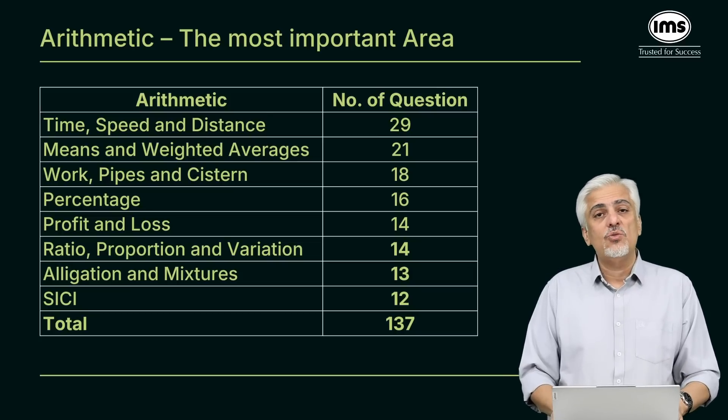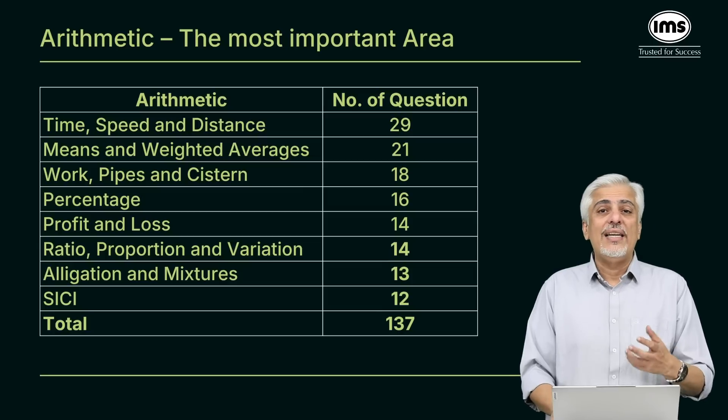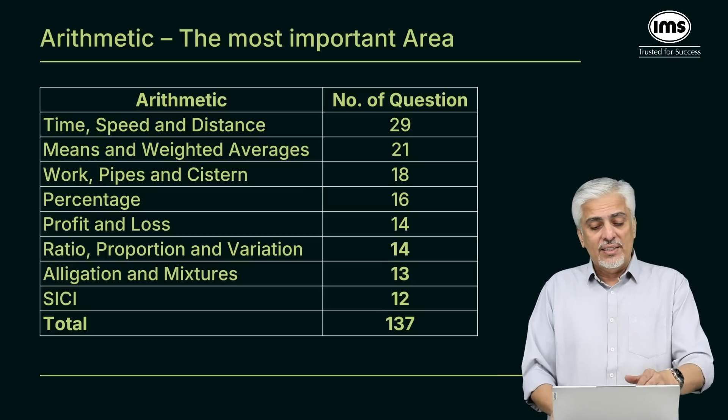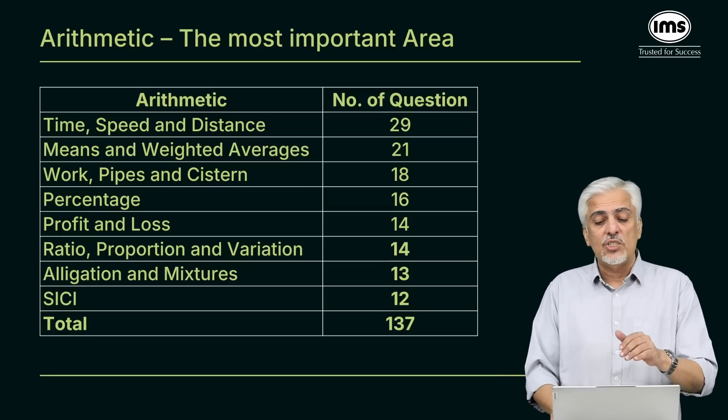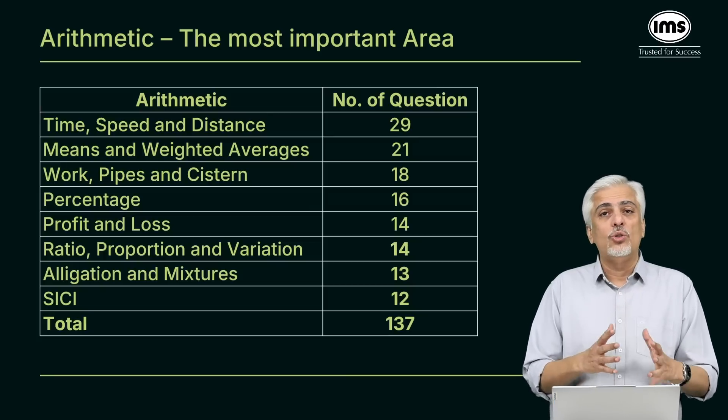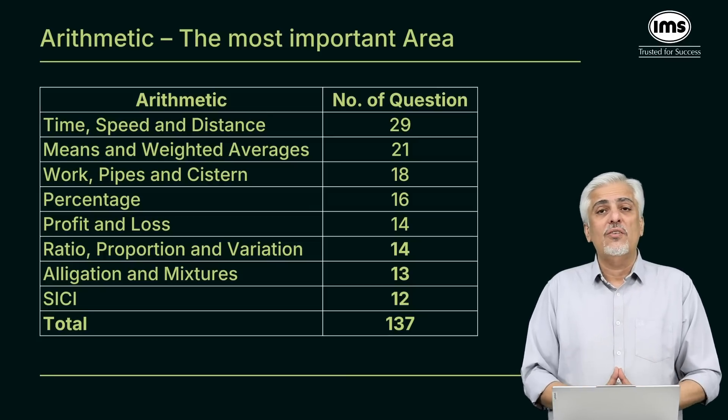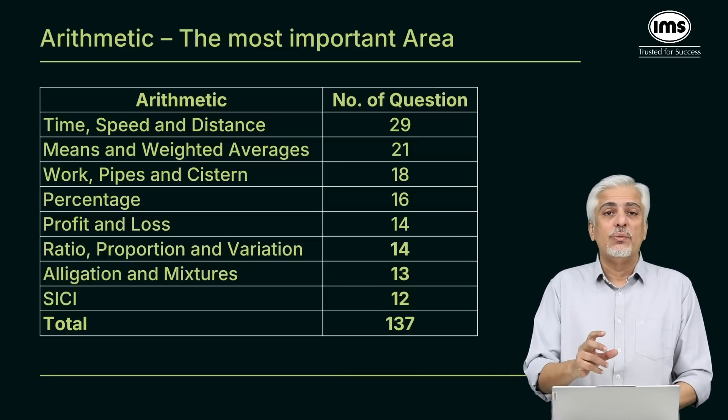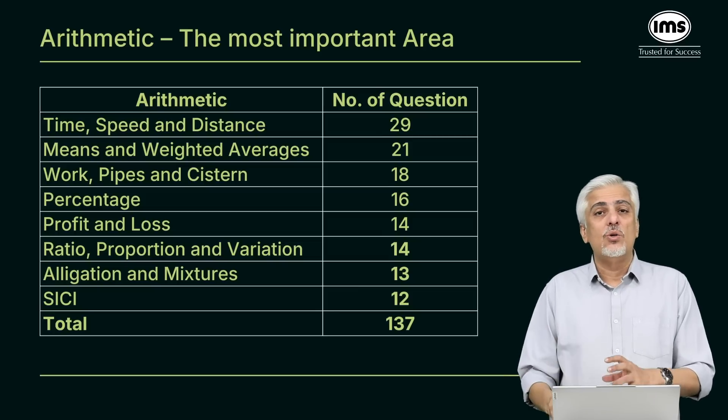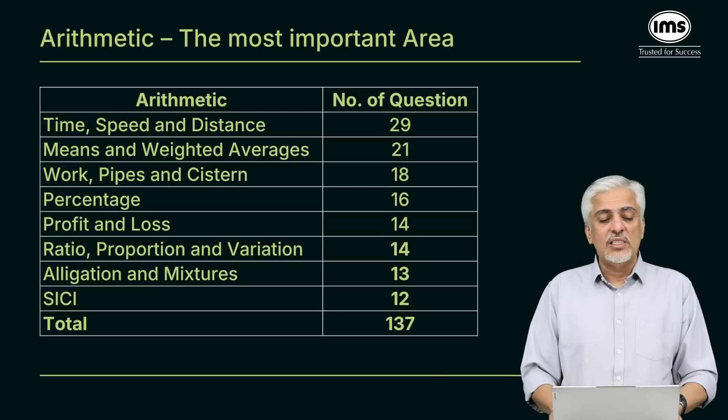Means and weighted averages will be next topic, which is very important. This will include all your allegations and mixtures and everything. And there is allegation mixture of 13 other questions also. So if you combine those two because they are very close by, a lot of average questions, average of so many people in class, one goes out, one comes in, all those type of questions are very important.